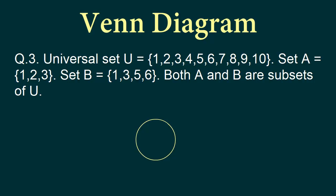We draw a circle representing set A and then draw set B overlapping with it. Why do we make them overlap? Because set A has element 1 and element 3, and set B also has 1 and 3. So the overlapping region will contain the numbers 1 and 3. Let's say this is set A and this is B. The overlap contains number 1 and number 3. The remaining element of set A is 2, and the remaining elements of set B are 5 and 6.